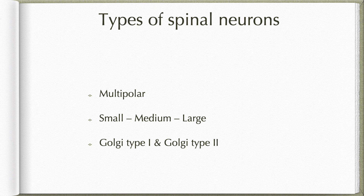Neurons in the grey matter of spinal cord can also be classified based upon the length of the axon into Golgi type 1 and Golgi type 2 neurons. Golgi type 1 neurons send their fibers as efferent fibers going through the ventral roots or as the ascending tracts. Whereas Golgi type 2 cells have their axons restricted to intersegmental or intrasegmental distribution within the grey matter of the spinal cord.